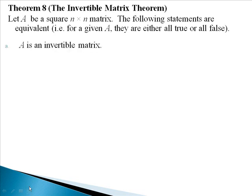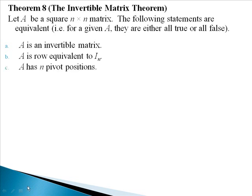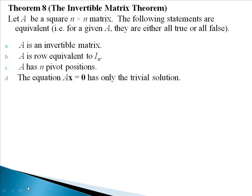A: the matrix A is an invertible matrix. B: A is row equivalent to the identity sub n, since it's an n by n matrix. C: A has n pivot positions — so if it's a 3 by 3, then we have three pivot positions. D: the equation Ax equals 0, which is the homogeneous equation, has only the trivial solution.